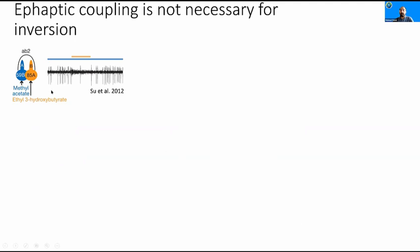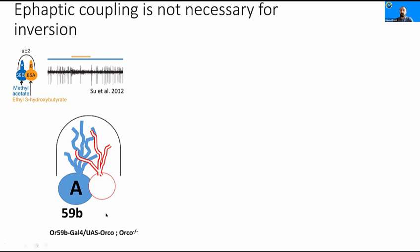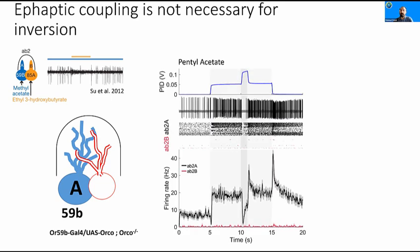Third, neighboring neurons in the sensilla can communicate via electrical coupling called ephaptic coupling. If you activate A-neuron with its specific odor, then activate B-neuron with its specific odorant, activation of B-neuron could inhibit the activity of A-neuron. Since our phenomenon involves one odor activating and then inhibiting the neuron, this could be mediated by ephaptic coupling. However, expressing ORCO only in the inverting neuron by driving GAL4 — eliminating the activity of not only B-neuron but all neurons in the fly — doesn't eliminate inversion, suggesting this phenomenon is not mediated by ephaptic coupling. A-neuron doesn't need B-neuron to invert.